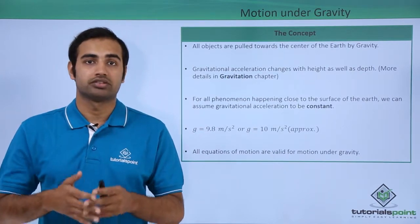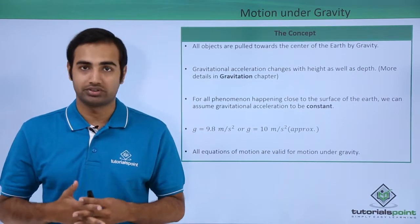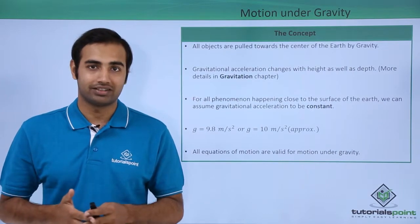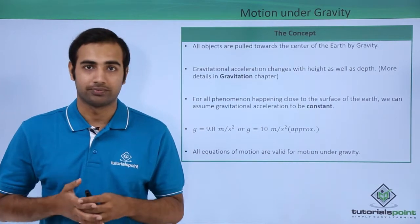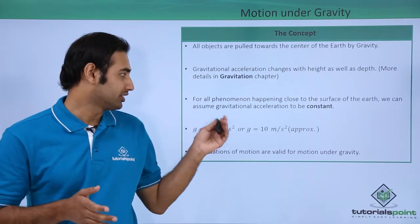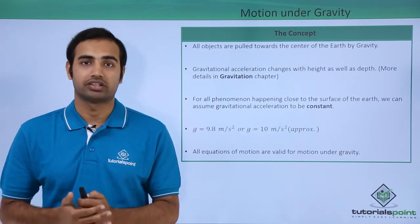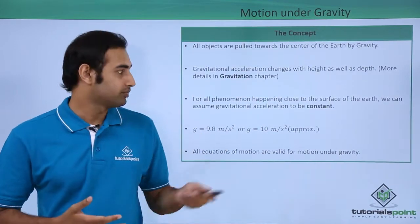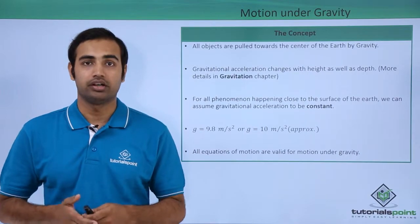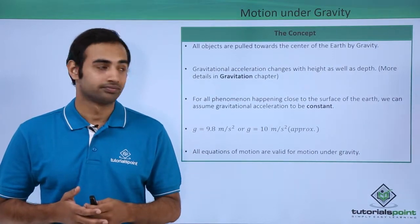But for all practical purposes, for all the phenomena happening close to the surface of Earth, the gravitational acceleration is almost constant. That constant value is equal to 9.8 meters per second square, which we also sometimes take as 10 meters per second square for the ease of calculations.